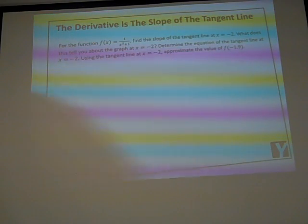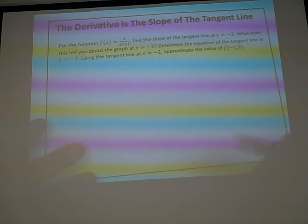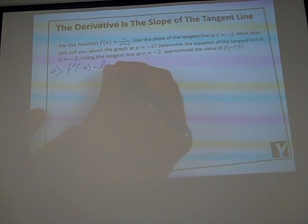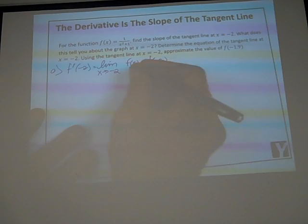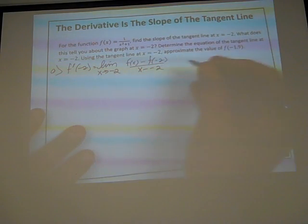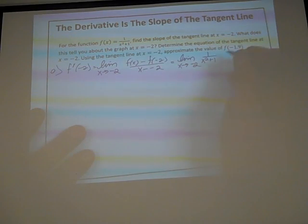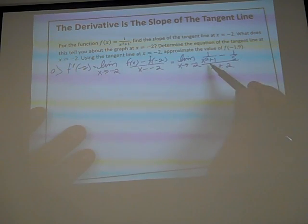We have the function f(x) = 1 / (x² + 1). We want to find the slope of the tangent line at x = −2. Using our formula, we need the limit as x approaches −2 of [f(x) − f(−2)] / (x − (−2)). That is the limit as x approaches −2 of [1/(x² + 1) − 1/5] / (x + 2), since plugging −2 into the function gives 1/5.